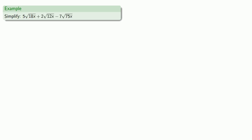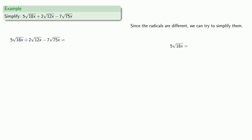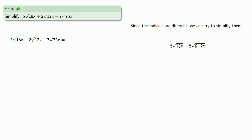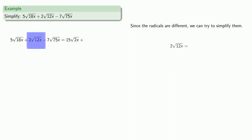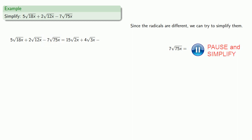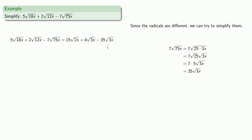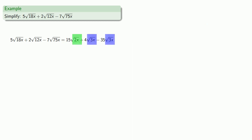We can extend this process to however many radicals we have. Since all of our radicals are different, we can try to simplify them. For 5 square root of 18x, a perfect square factor of 18x is 9 times 2x. The square root of a product is the product of the square roots; the square root of 9 is 3, and we can multiply 5 times 3. Similarly, 2 square root of 12x and 7 square root of 75x can each be simplified. We end up with two different radicals, square root of 2x and square root of 3x, but we can combine the coefficients of the like radicals.